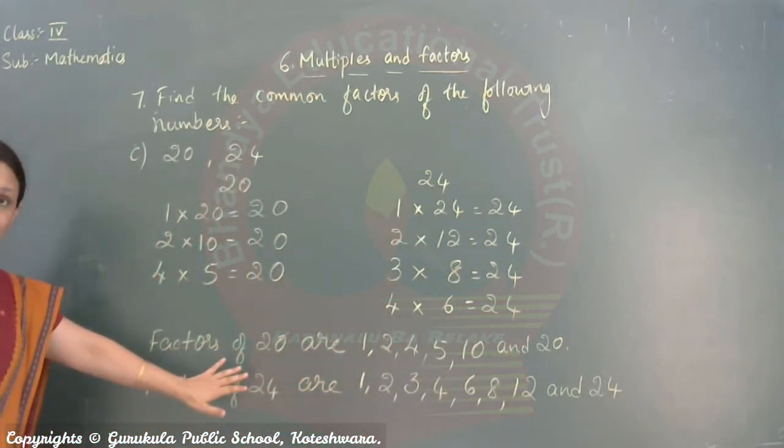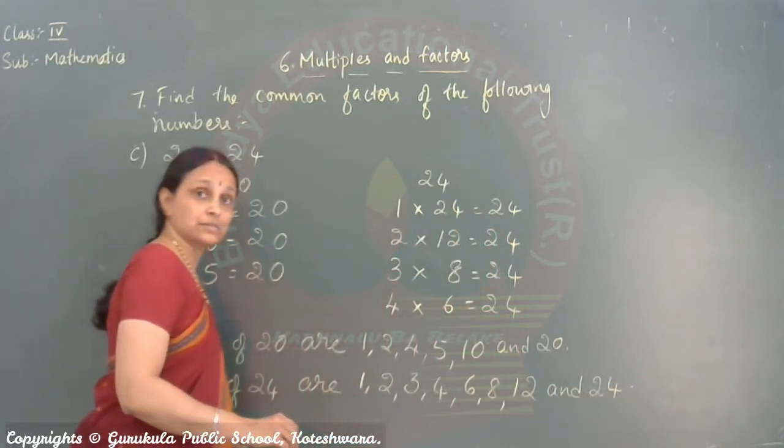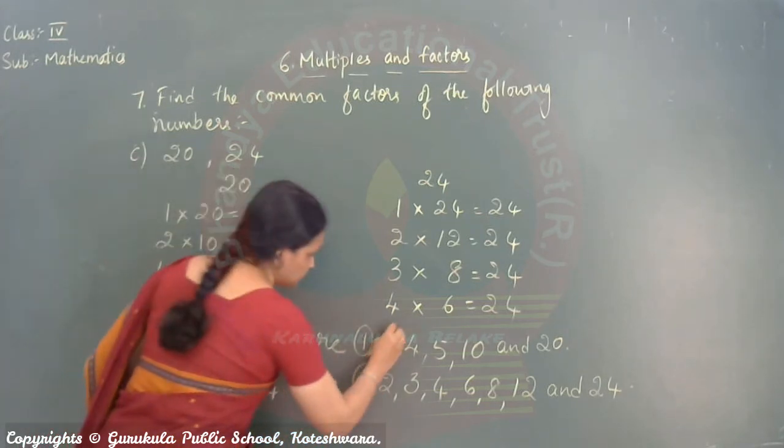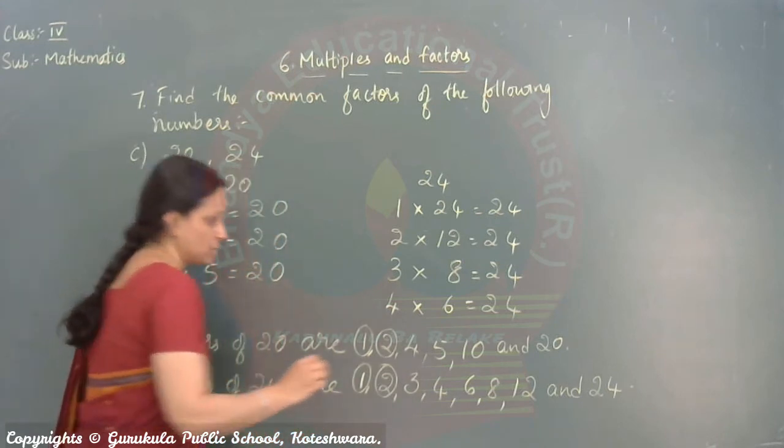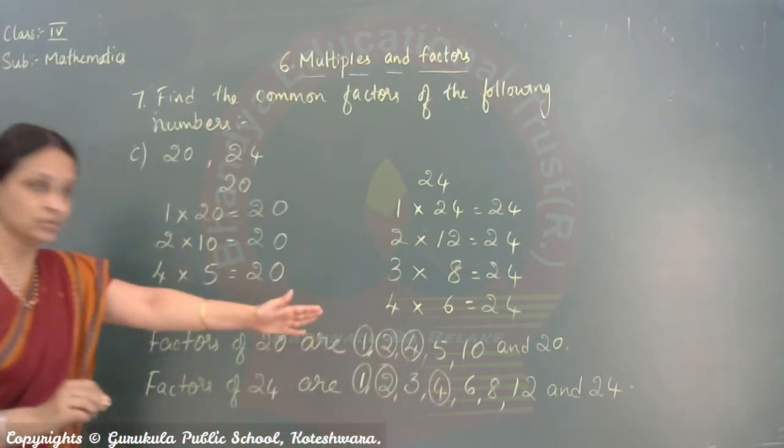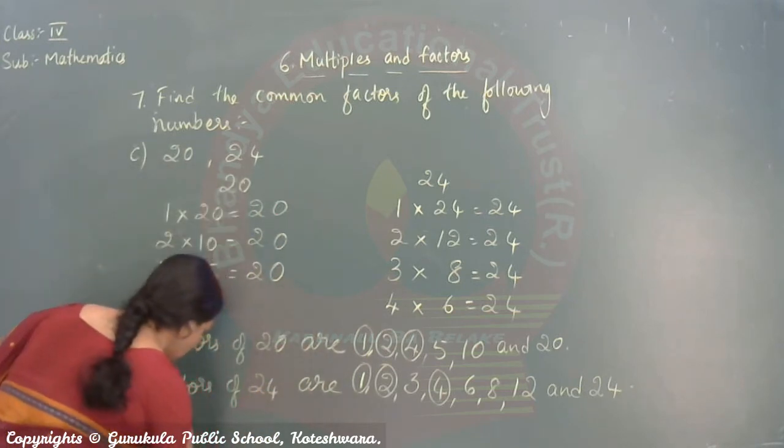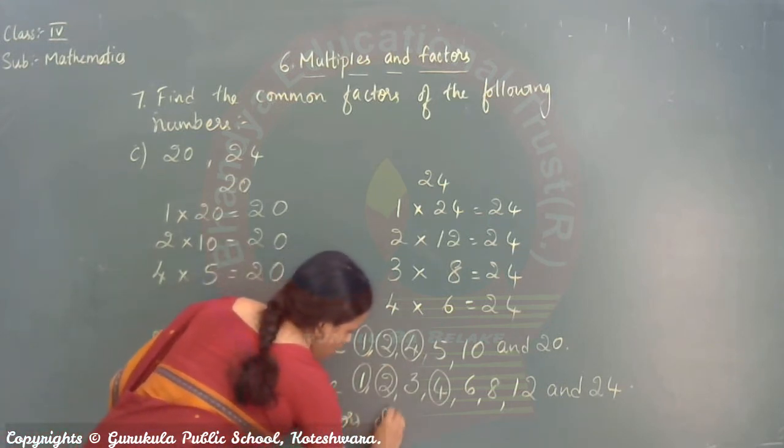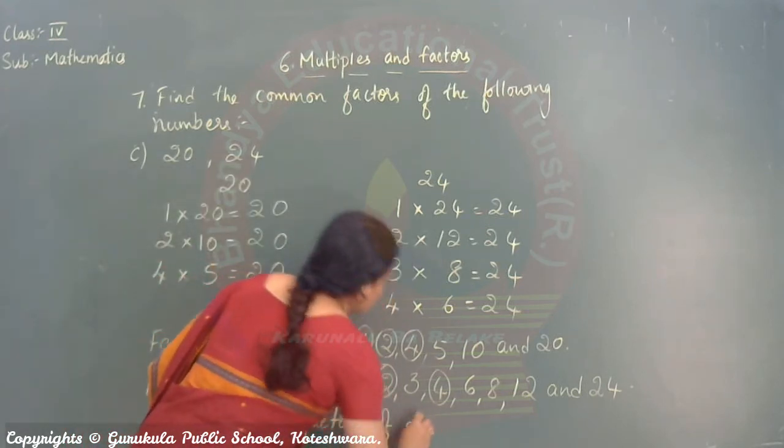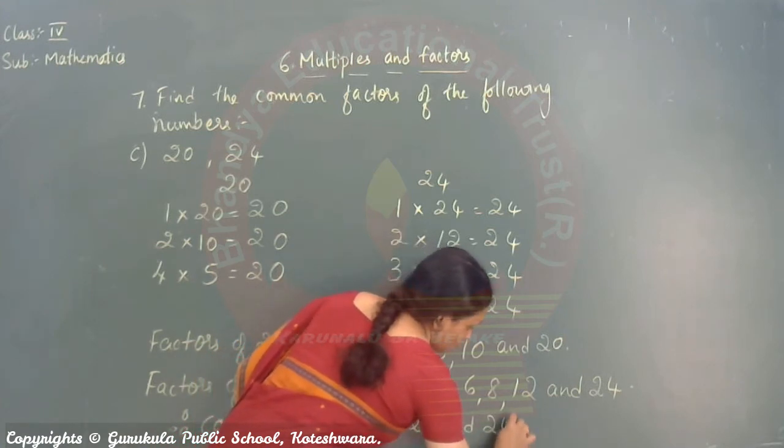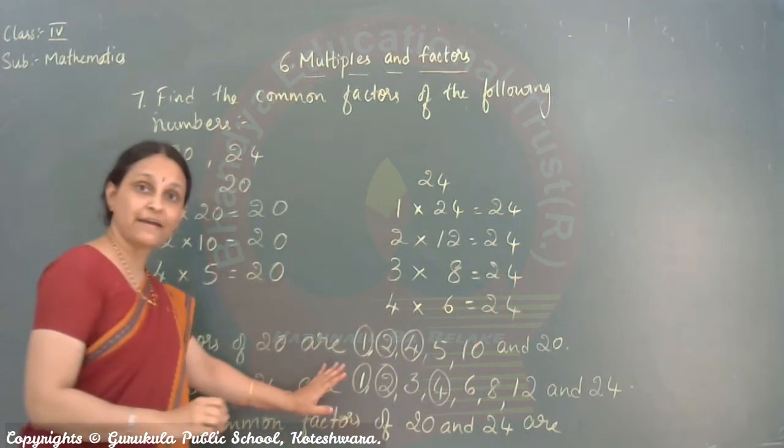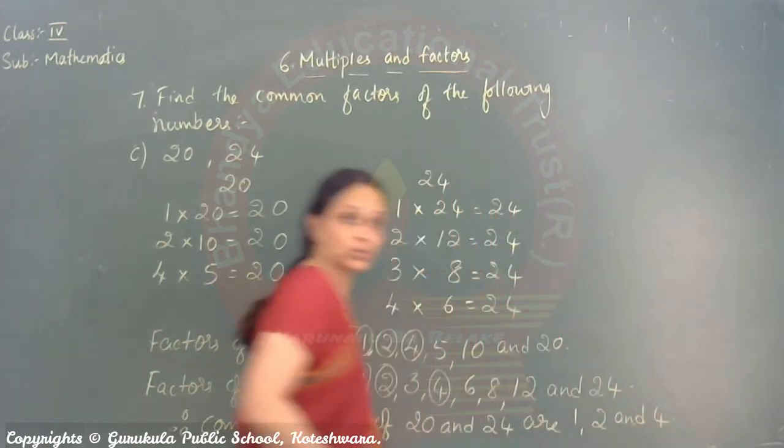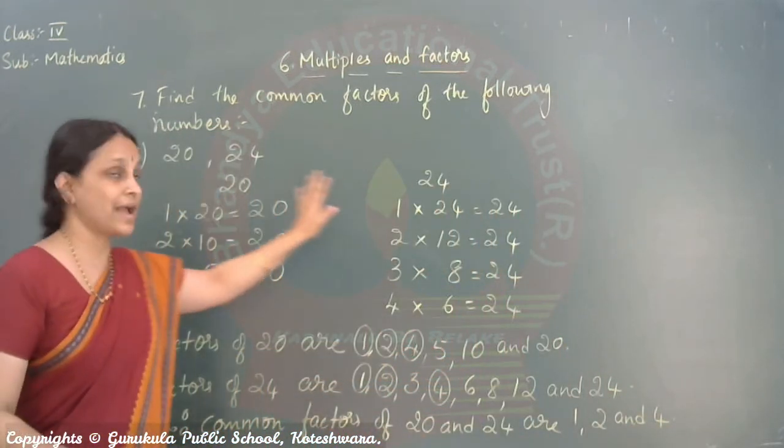These are the factors of both the numbers. Now. How do you find the common factors? Circle the numbers which are same in both the factors. 1, 2, 4. Any more? No. That's it. So. Write down. Therefore. Common factors of 20 and 24 are. Which are the common factors. Write down children. 1, 2, and 4. So these are the common factors of 20 and 24.